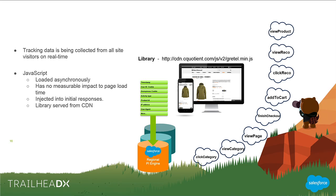A bit about activity tracking — the clickstream data. On the right you have all the different events we track: category views, checkouts, add-to-carts, whether shoppers are clicking recommendations, and product views. We're constantly expanding the events tracked for a fuller picture, especially with our new Predictive Sort feature, which applies a similar scoring model to search results and category pages — we're now looking at search query terms and the product sets that result. It's loaded asynchronously with no measurable impact on load time.